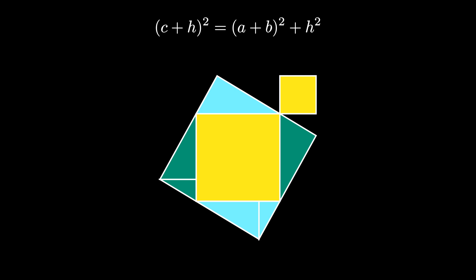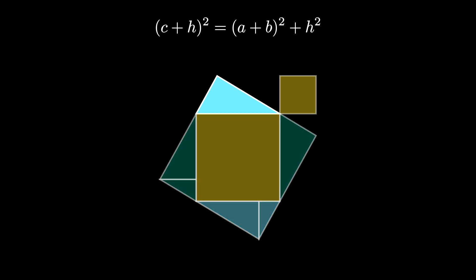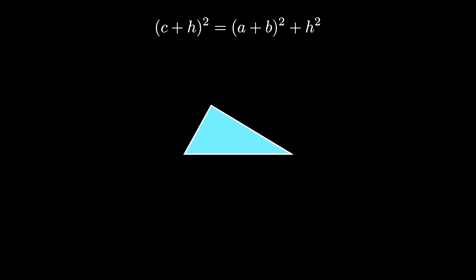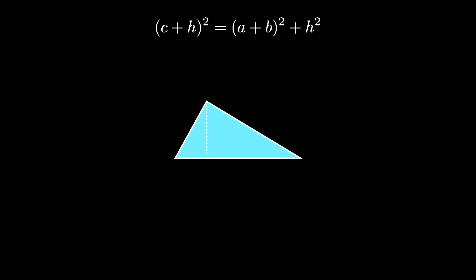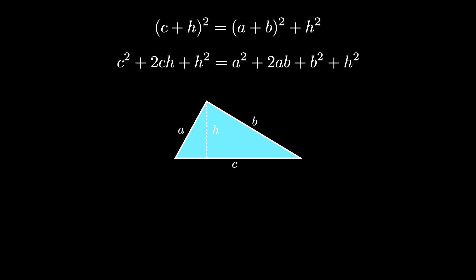This formula implies the Pythagorean theorem. Let's see how by revisiting the original triangle. This triangle had sides of length A and B and a hypotenuse of length C and an altitude of length H. We can expand the formula algebraically like this, and then we compute the area of the triangle in two ways — one half times the base times the height — to realize that A times B equals C times H.